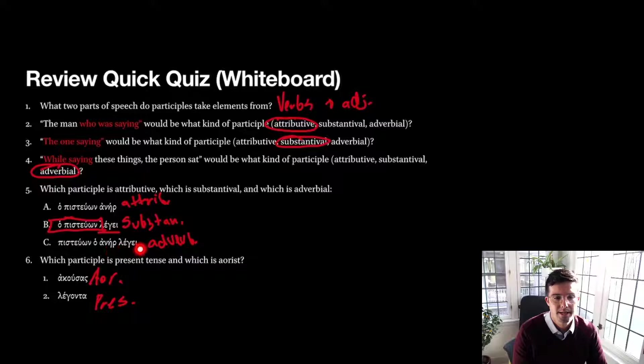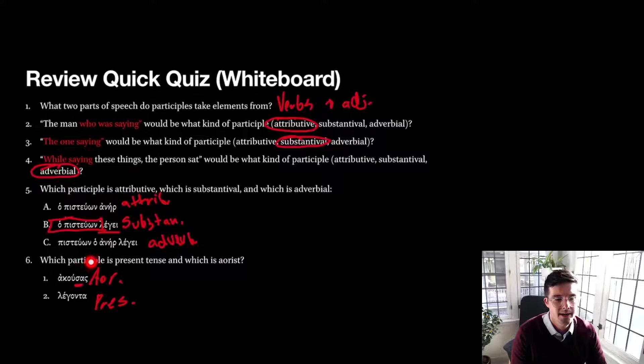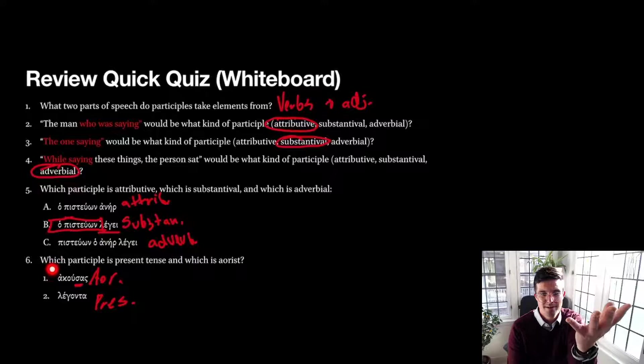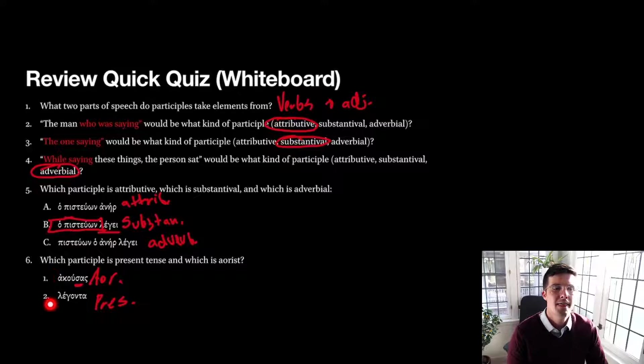So 'believing, the man speaks.' And then 'akousas' is going to be our aorist — we see that with the 'sa' in there. And then the 'sasiēsontas' — the third declension, that sigma in there — telling us nominative masculine singular. Notice this is aorist but it does not have an augment. That is because, as we've said several times now, participles don't take augments.